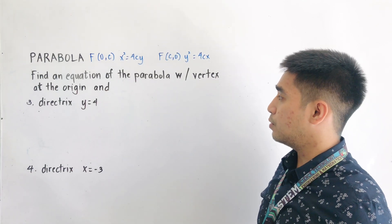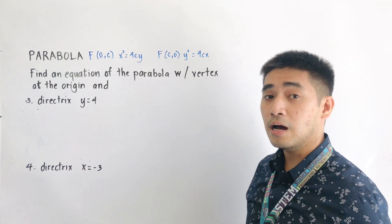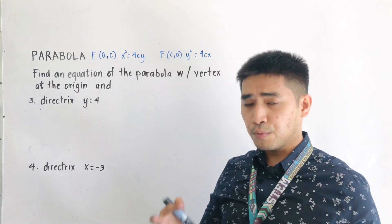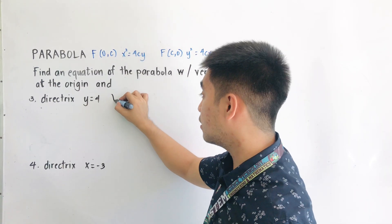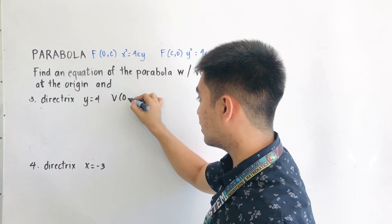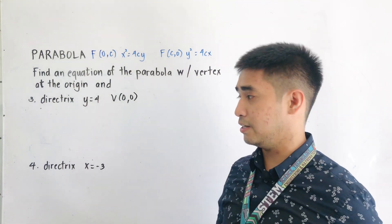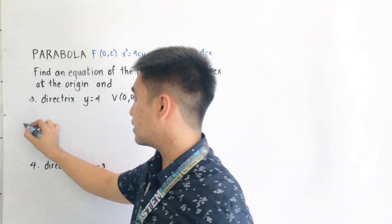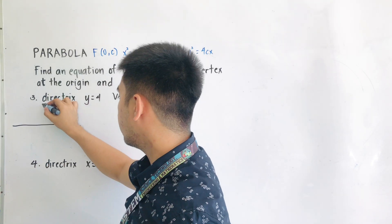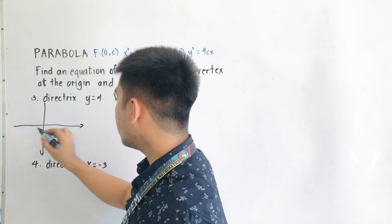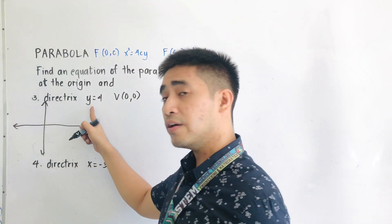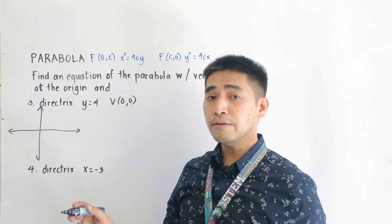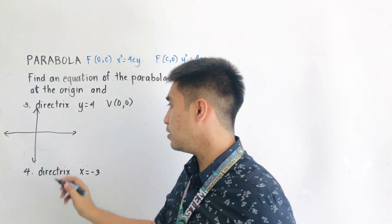So we are now asked to find an equation of the parabola with vertex at the origin and directrix y is equal to 4. We are only given the directrix and the vertex, and the vertex is located at the origin. Let us first draw the directrix. The directrix is located at y is equal to 4. We are given an equation of the line y equals 4, therefore this line is horizontal.